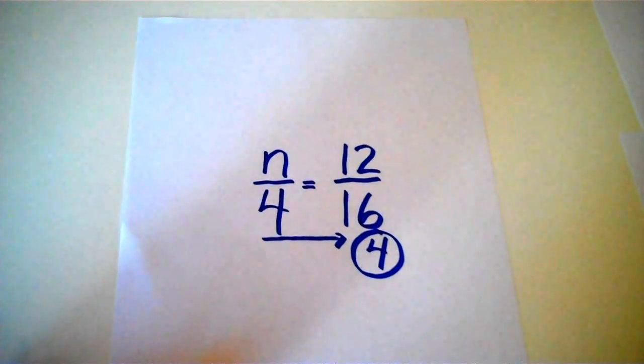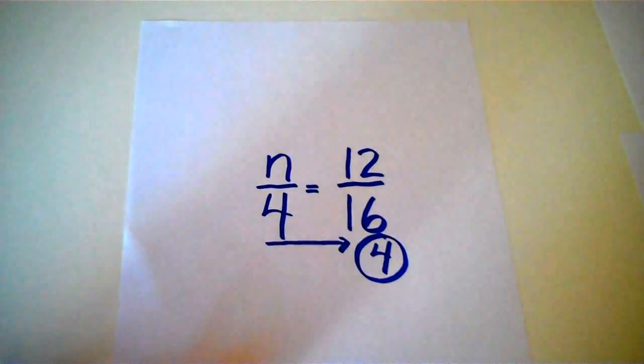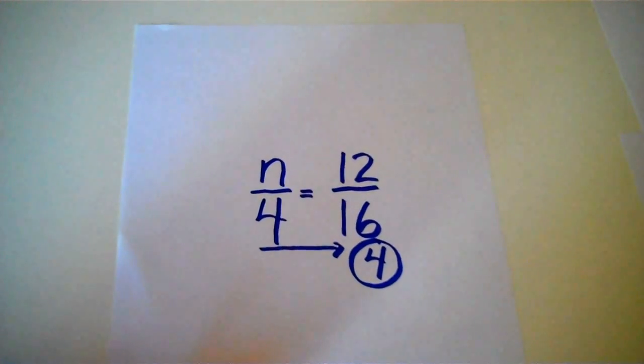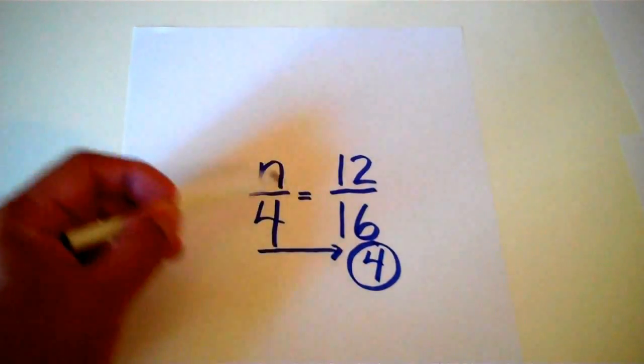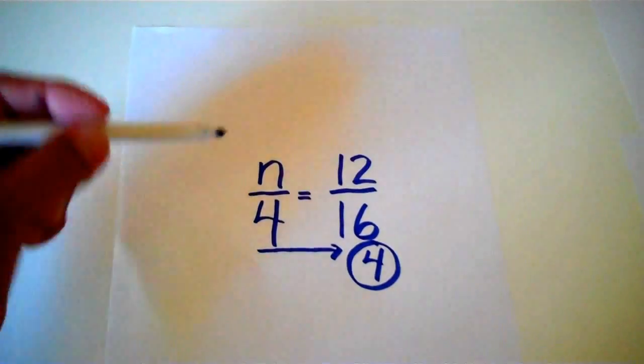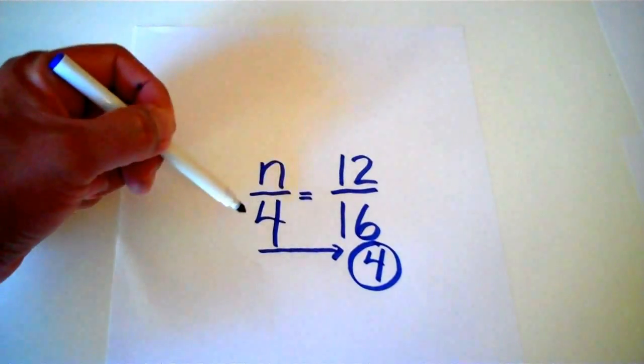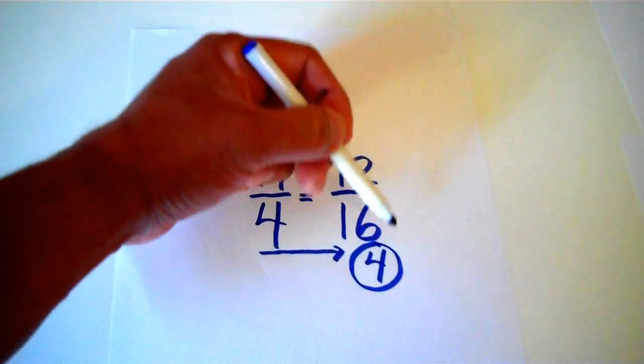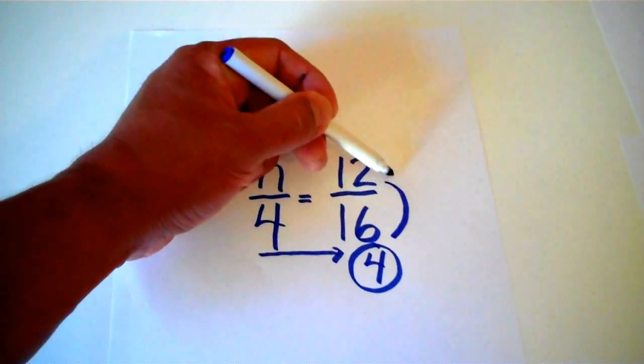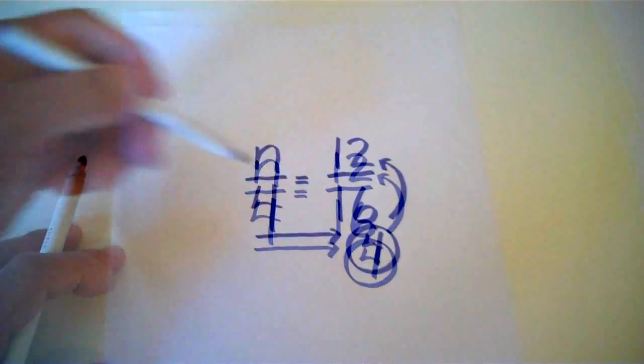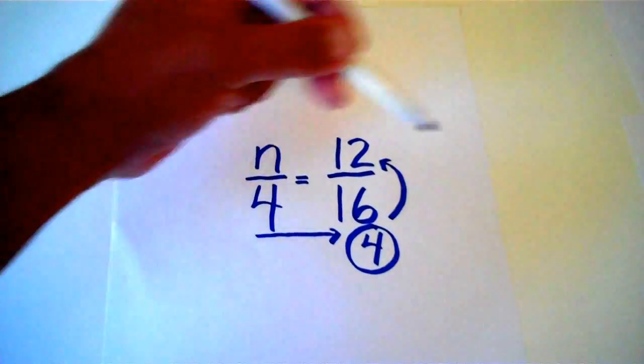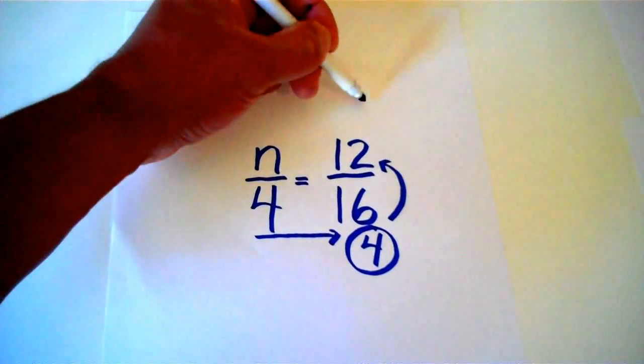So this is the method that I call the roadblock method, or the divide twice method. Instead of multiplying the 4, and we can't because the variable is there, we will take our answer, 4 into 16, which was 4, and we will actually divide it into the third or remaining number. And 4 into 12 is 3! Beautiful job!